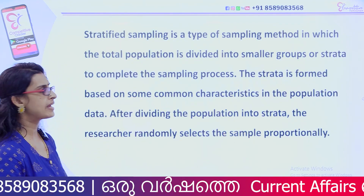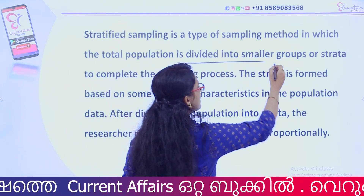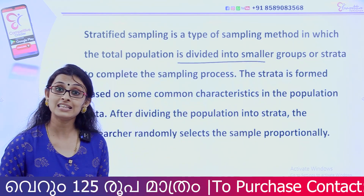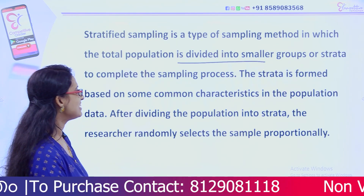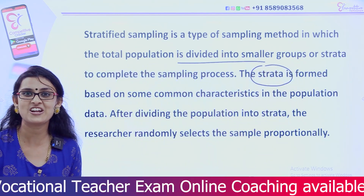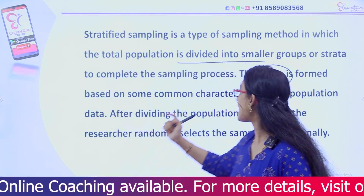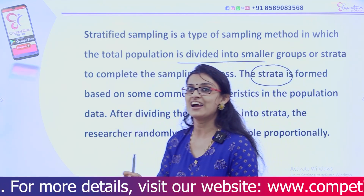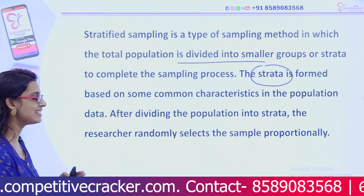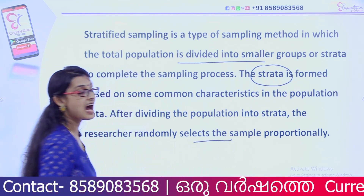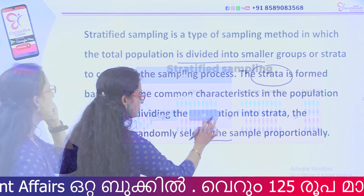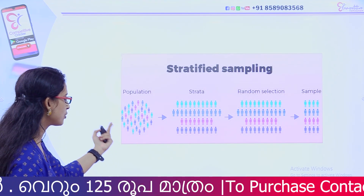That is stratified sampling. In stratified sampling, the population is heterogeneous. The keyword here is 'strata' — this is important for exams. We divide the population into strata, and from each stratum we draw a sample. The population is classified into pink, blue, and green groups, and random selection is done within each stratum.